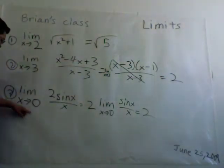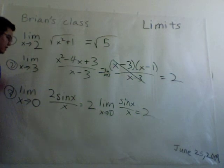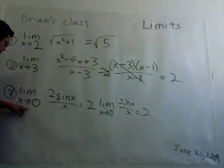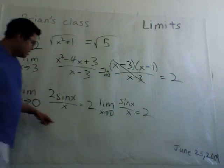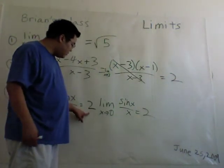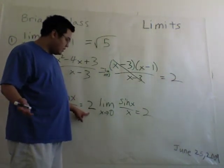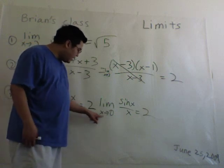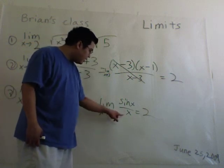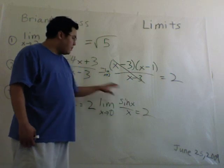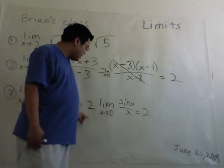Alright, limit as x approaches 0 of 2 times sine of x over x. Now, that's the same as limit as x approaches 0 of 2 times limit as x approaches 0 of sine of x over x. So again, that's 2 because you can evaluate the limit as x approaches 0 of 2. That's the middle x, so you just cut 2 times limit as x approaches 0 of sine of x over x. This is a limit that you have to memorize. The answer is 1, so the answer is 2.